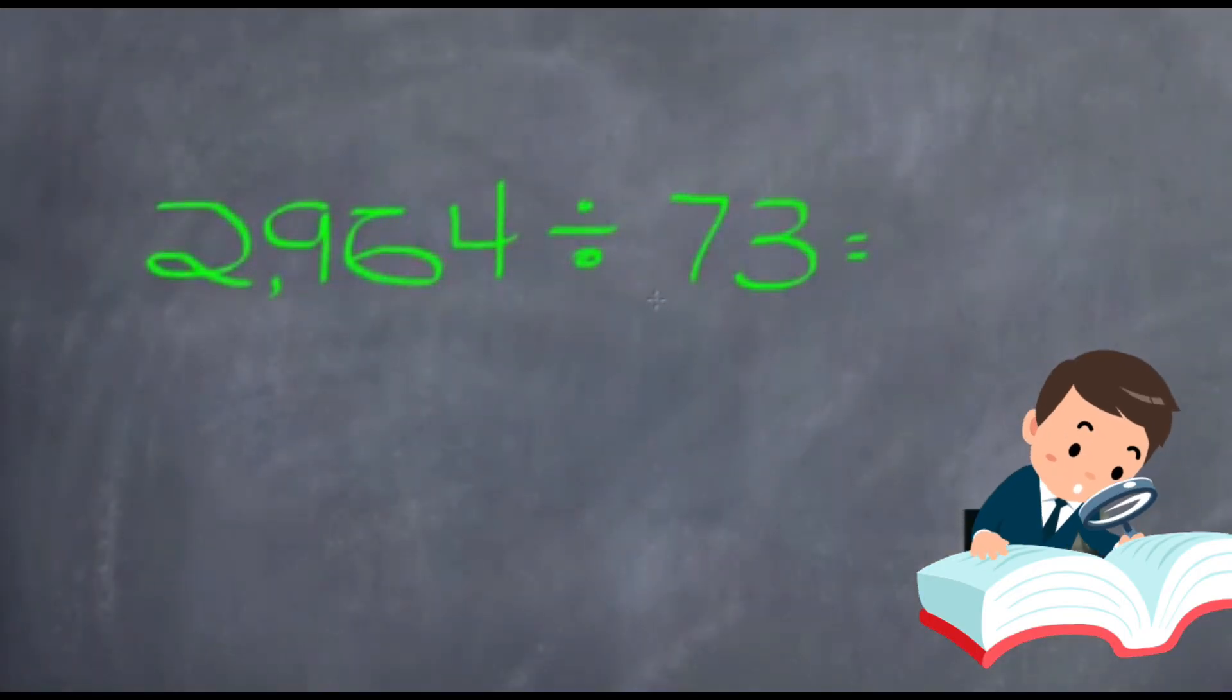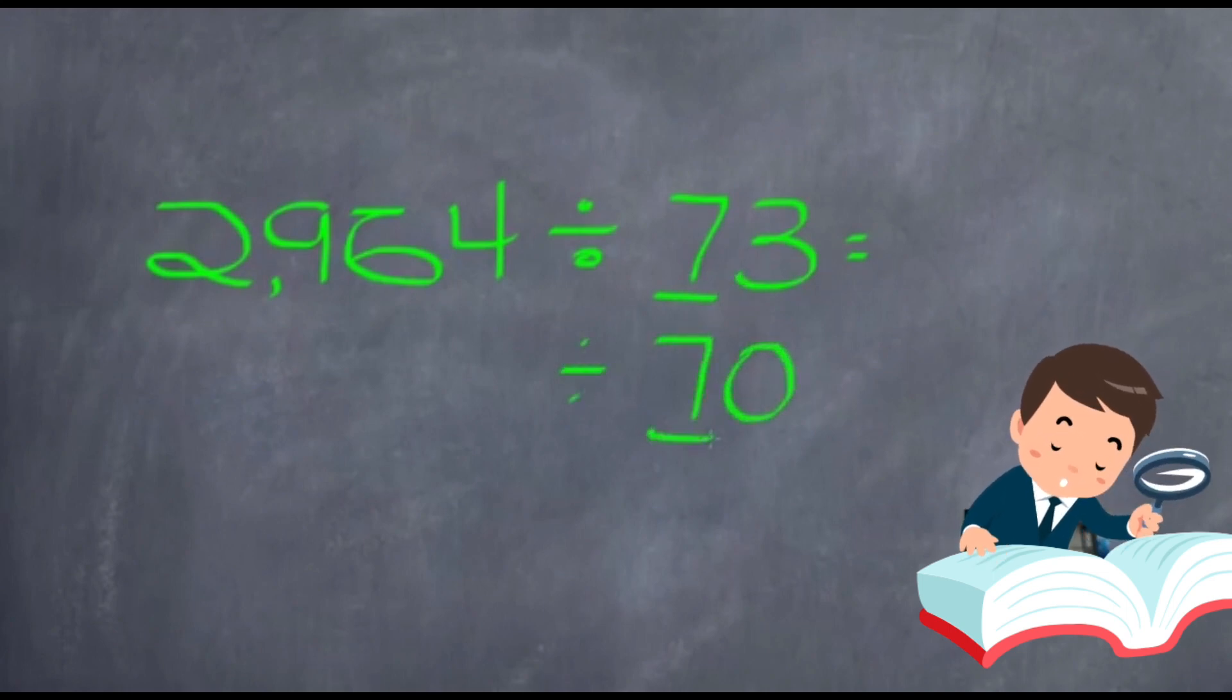2,964 divided by 73. First we will estimate 73. Since 3 is less than 5, so 73 becomes 70.